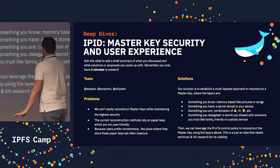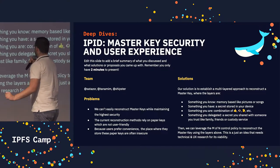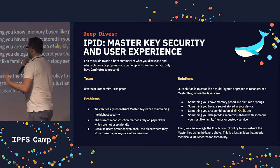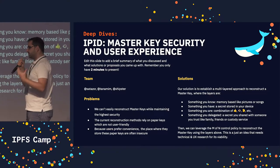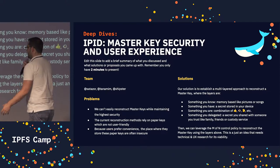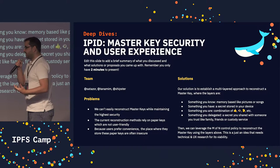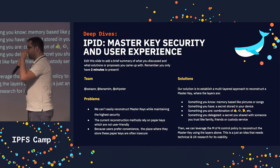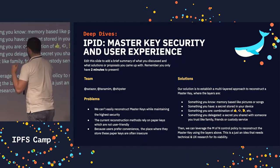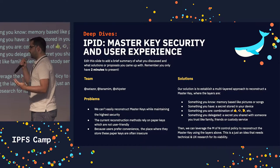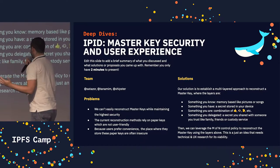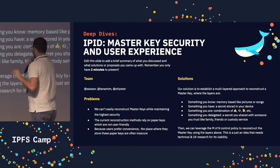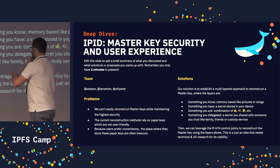Our solution is to establish a multilayered approach where we have something you know — like a memory, for instance a song or a video that triggers the answer to something. It's something that you have, like a secret installed in your device. It can also be your fingerprint or iris, and something that you delegated to a friend — a secret that you share with a friend. By applying M of N of these things, we could reconstruct the master key using this multilayered approach.